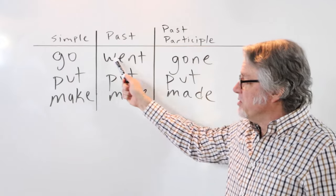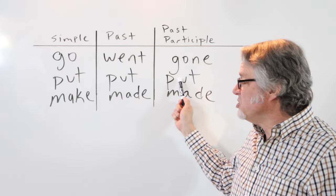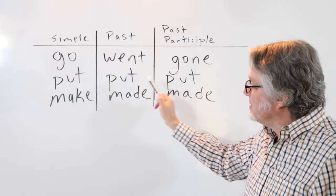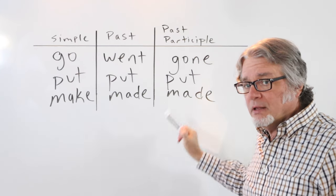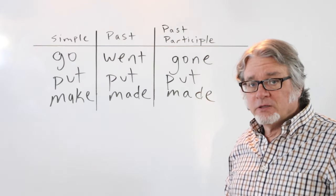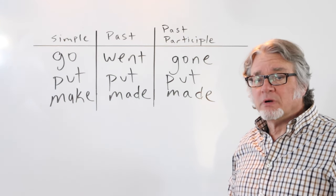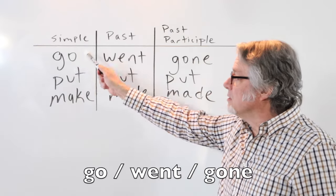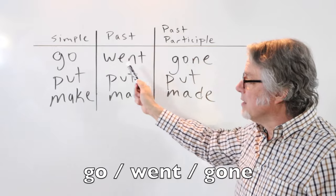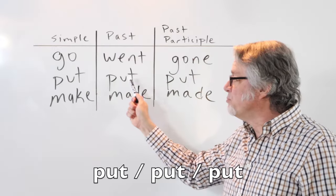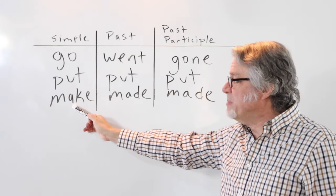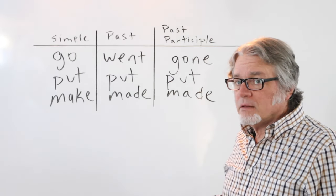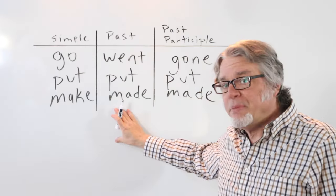Sometimes the verb changes a lot and sometimes it doesn't change at all, and then there are other times when the past tense is the same as the past participle. There are many, many irregular verbs. You have to remember how they all change. Here's the verb 'go': go, went, gone. Put, put, put. Make, made, made. These irregular verbs are shown in the form of the past tense.